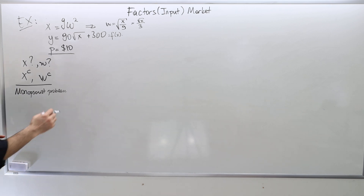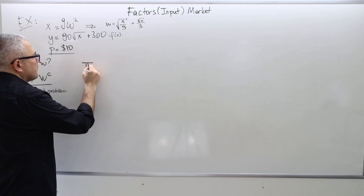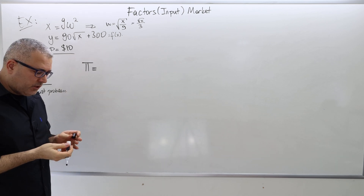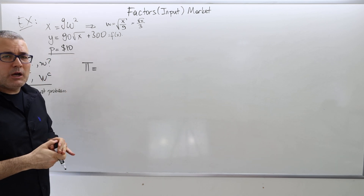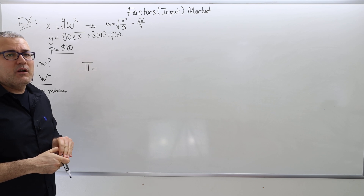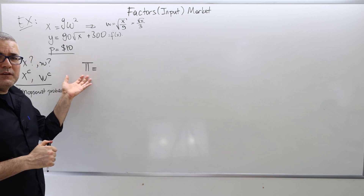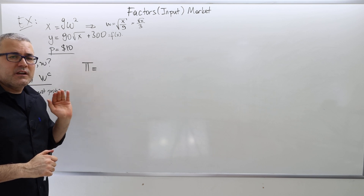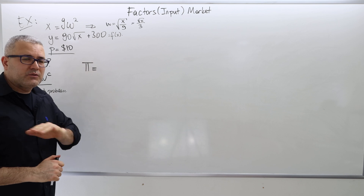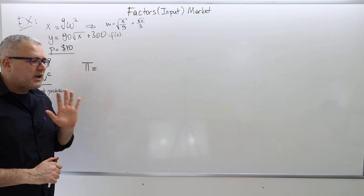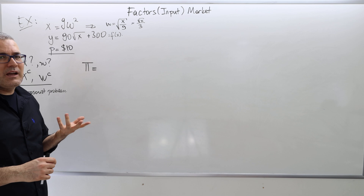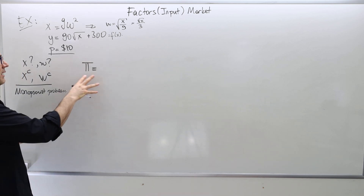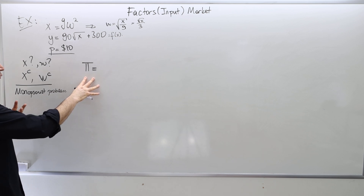What is the profit function of the monopsonist? You don't need to memorize marginal revenue and marginal cost formulas for monopoly or monopsony — just understand how to set up the profit function for each case. Then the rest is the standard approach: take the derivative, set it equal to zero, and solve. So let's set up the optimization problem. Profit equals revenue minus cost.